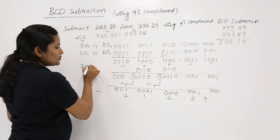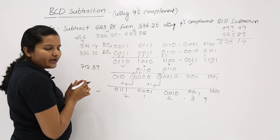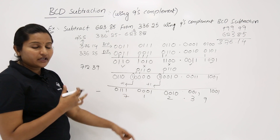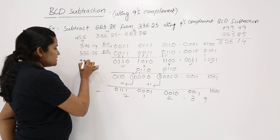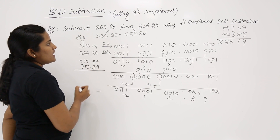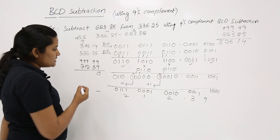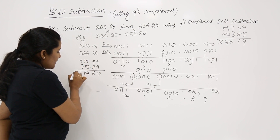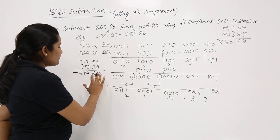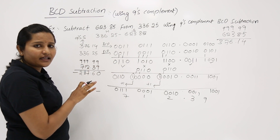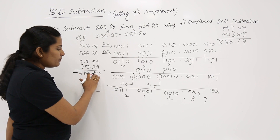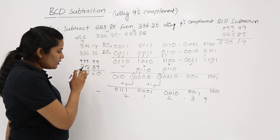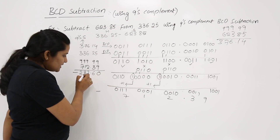Since we got no end-around carry, this result 712.39 is in 9's complemented form. To get the actual form, we take the 9's complement of the result again: 9−9=0 (wait, the digits are 7,1,2.3,9), so: 9−7=2, 9−1=8, 9−2=7, 9−3=6, 9−9=0, and add a negative sign. So we get −287.60.